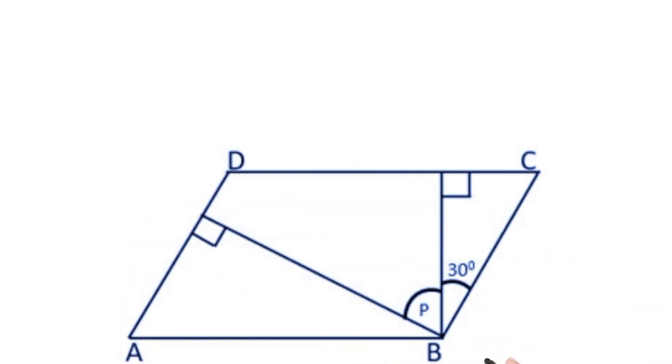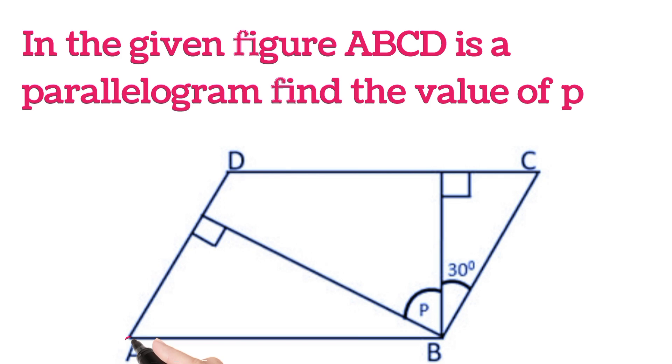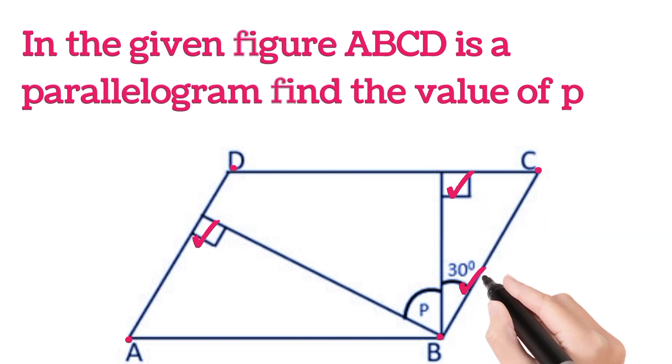Hello everyone, welcome back once again. Today I have taken another question in which it is given ABCD is a parallelogram. This angle is 90 degrees, this angle is 90 degrees, this is 30 degrees. Then find the value of p.